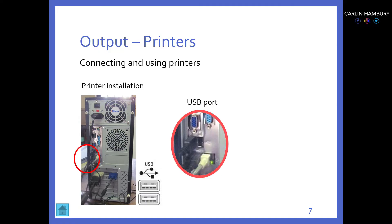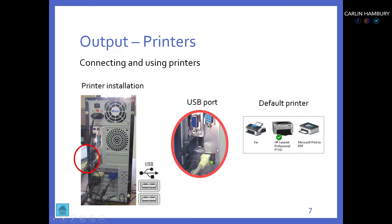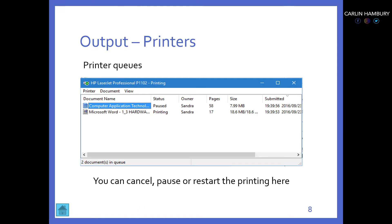These printers connect through USB ports — most external devices connect via USB. Also on your computer, when you see a little green dot over a printer icon, that's showing you that it is the default printer, but that's something we will go through at a later stage.